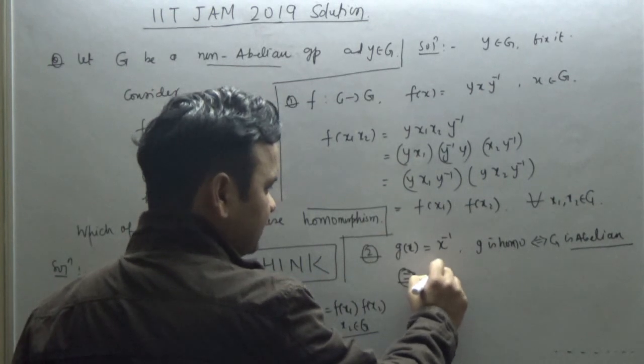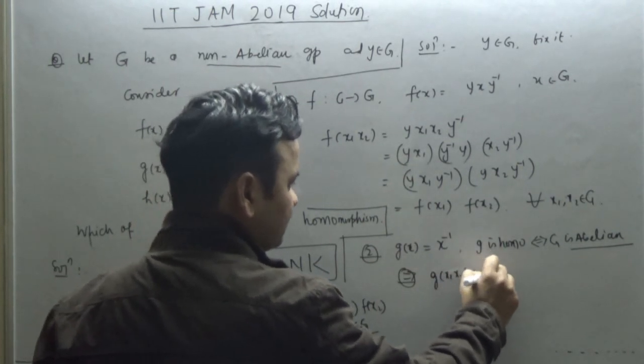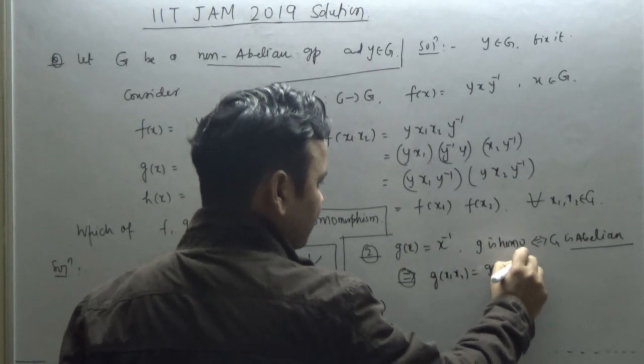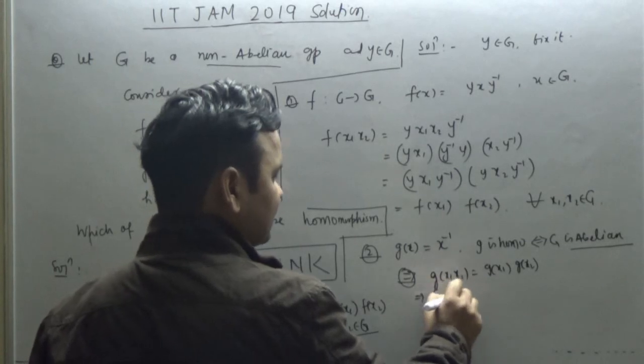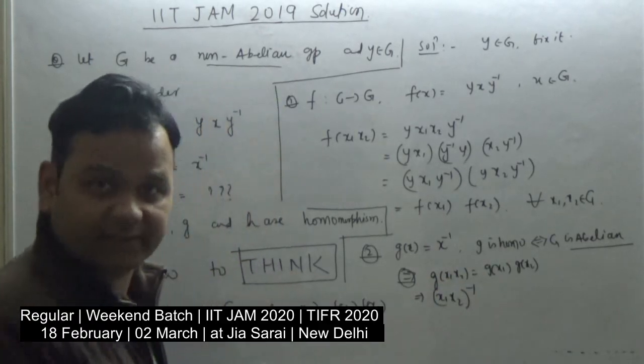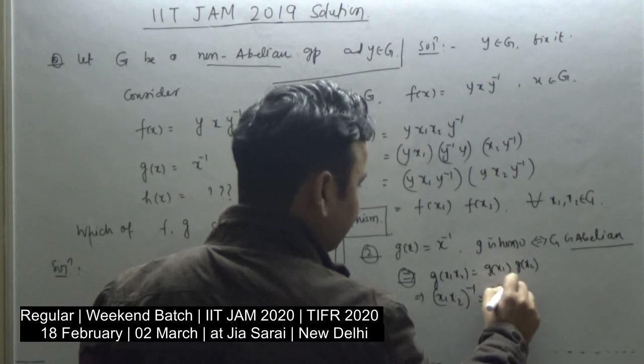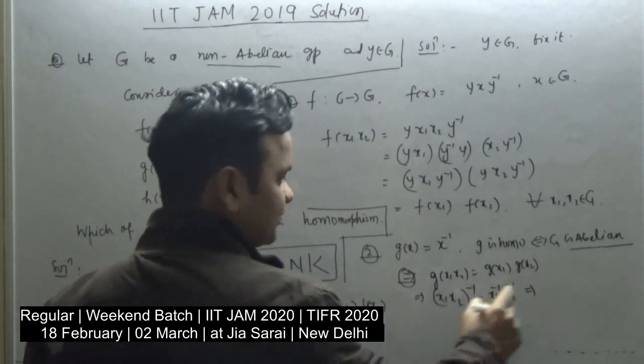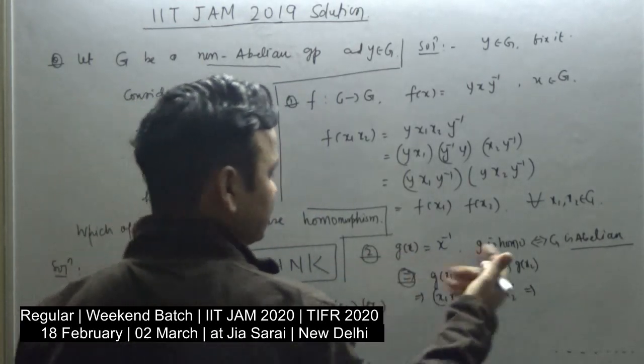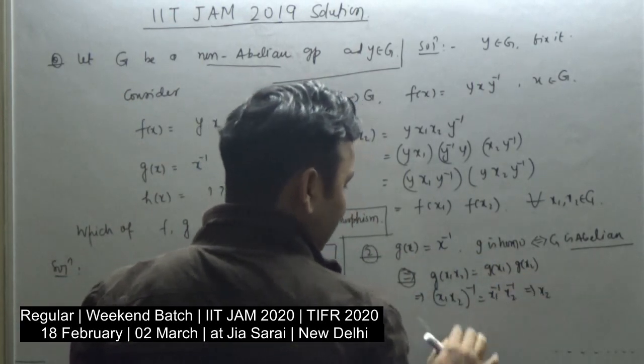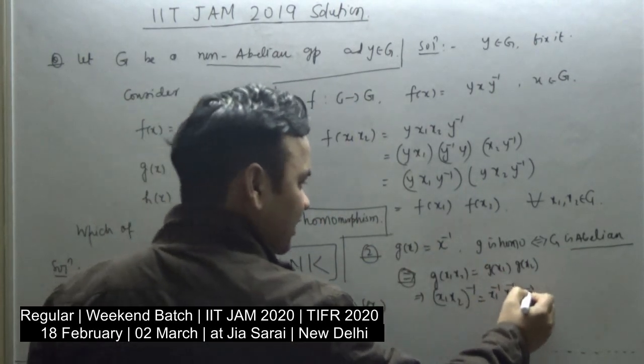Why? If the group is a homomorphism, then g of x1 x2 is equal to g of x1 g of x2. What is g of x1 x2? (x1 x2) inverse. And what is this? This is nothing but x1 inverse x2 inverse.